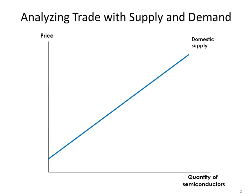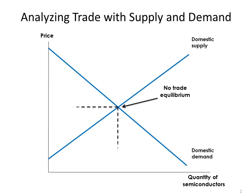Here is the domestic supply curve — the supply curve of the home country firms. If we're thinking about the U.S., this is the supply curve from U.S. firms. Here's the demand curve, domestic demand from U.S. consumers. If we had no international trade, we would find the equilibrium where quantity demanded equals quantity supplied, giving us the price and quantity with no international trade.